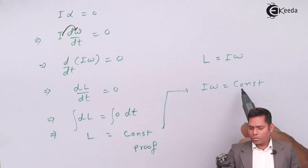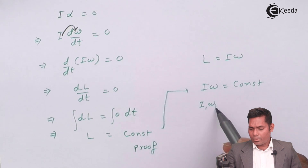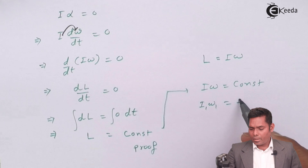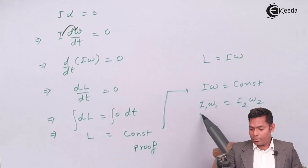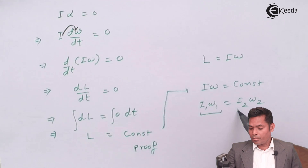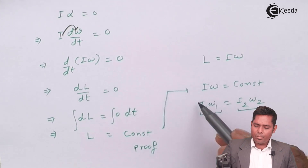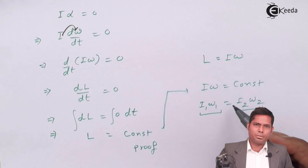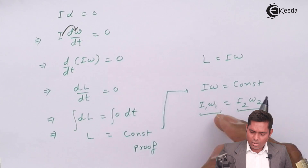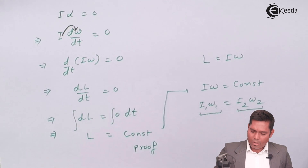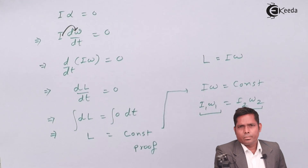That means I₁ω₁ = I₂ω₂. The meaning is that the angular momentum before and the angular momentum after must be the same — the initial angular momentum and the final angular momentum must be the same for the system. This is the law and the proof of conservation of angular momentum.